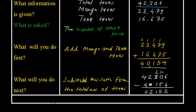So let me write the answer. There are 2,152 other trees in the forest.